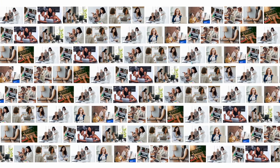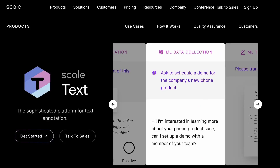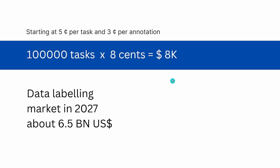You might say: for millions of sentences I need tens of thousands of people — and yes, absolutely. Companies like Scale AI, as mentioned by OpenAI, officially offer this job. You have a data collection platform where people write summaries to prompts. This is the new business of microjobs. A task costs about five cents and an annotation about three cents. For 100,000 prompts and summaries, that costs just $8,000 US dollars.